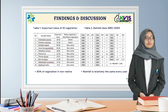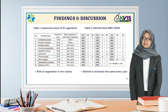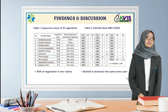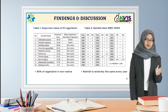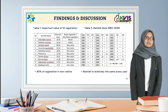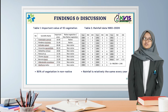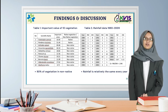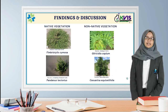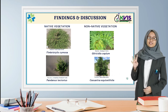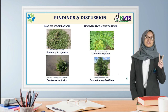Next, we have two tables. Table 1 shows the importance value of 10 vegetation species. The importance value shows that these species have a vital role in the sand dune's deformation. It shows that 80% of vegetation on Parangtritis Sand Dune that plays a bigger role is non-native vegetation. Table 2 shows the rainfall data from 1980 to 2009, showing that rainfall is relatively the same every year on both rainy and dry months.